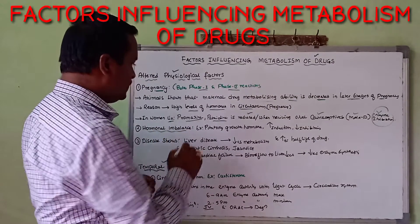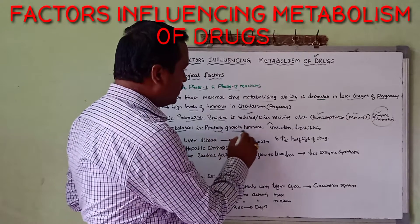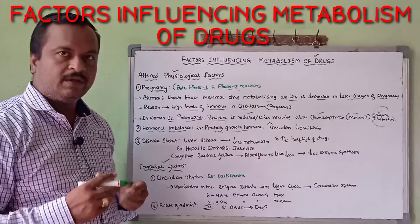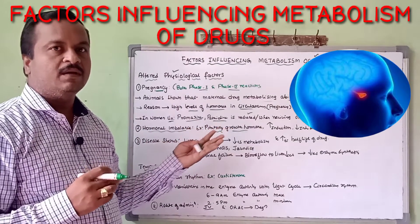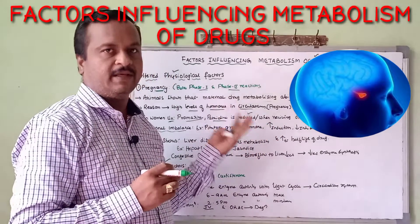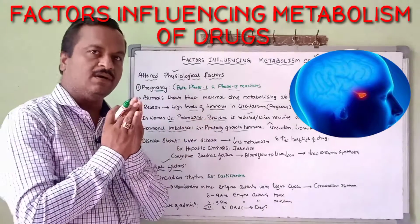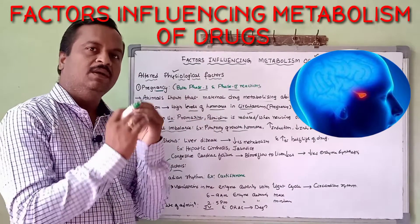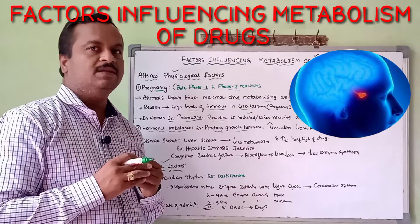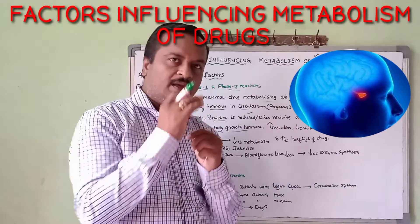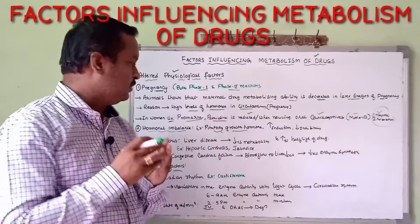Next comes hormonal imbalance. An example is the pituitary growth hormone. If it increases or decreases, automatically induction as well as inhibition of enzyme activity will take place. Hence the pituitary growth hormone is also very much important in the rate of metabolism — sometimes it increases the enzyme activity, whereas sometimes it shows inhibition of enzyme activity, thereby altering the rate of metabolism.